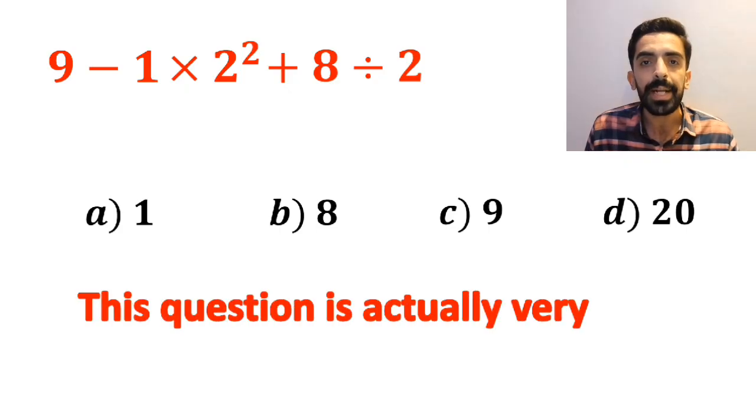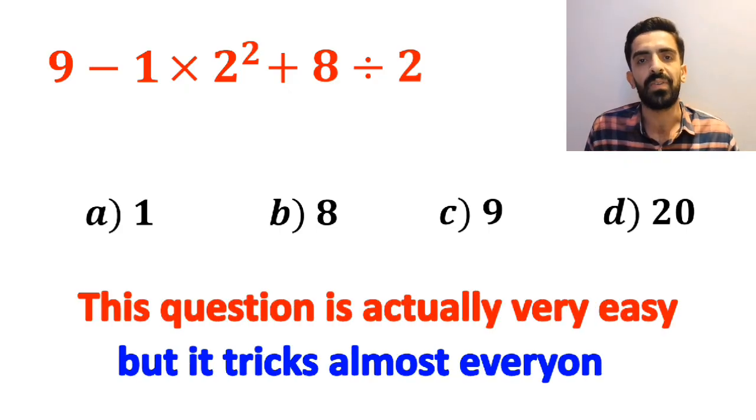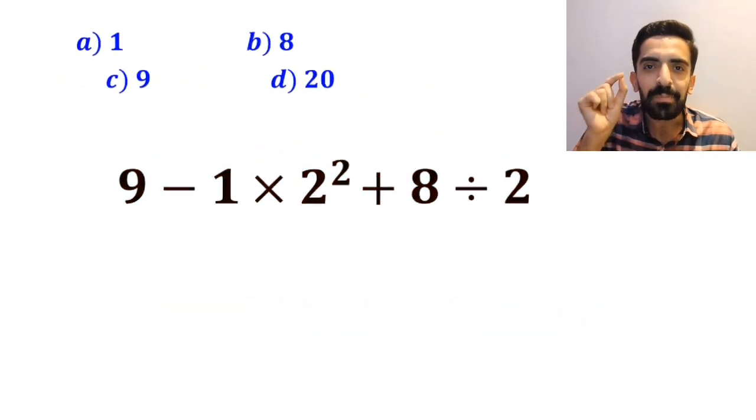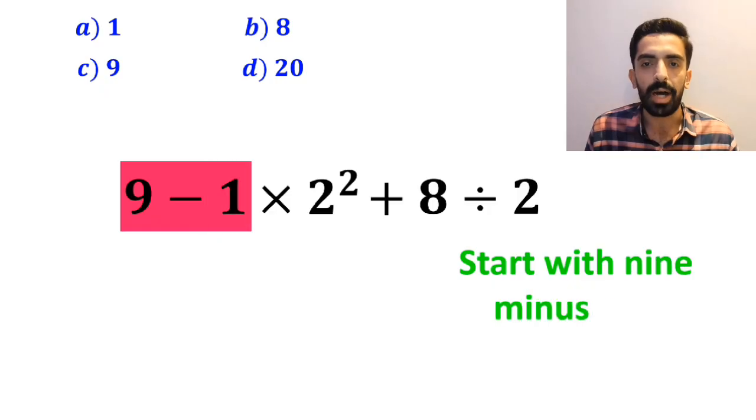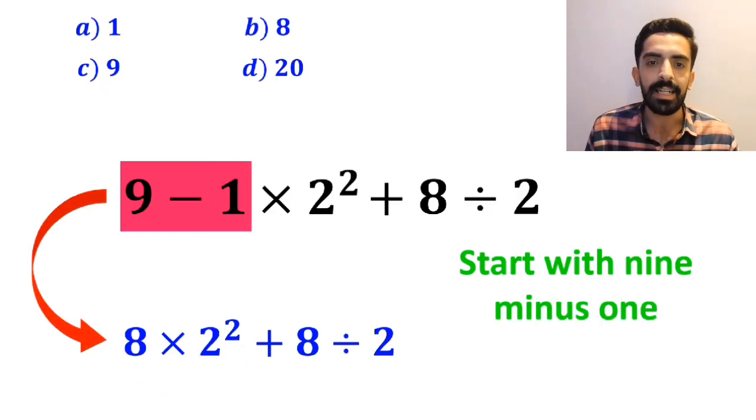This question is actually very easy but it tricks almost everyone. Let's dive in and break it down step by step together. Many people when solving this question start with 9 minus 1 and rewrite this expression as 8 times 2 squared plus 8 divided by 2.